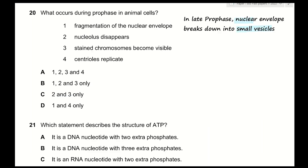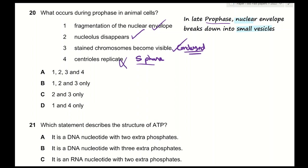Question 20: what occurs during prophase in animal cells? 1 — fragmentation of nuclear envelope — correct: in late prophase the nuclear envelope breaks down into small vesicles. 2 — nucleolus disappears — correct: this also happens in late prophase. 3 — stained chromosomes become visible — correct: chromosomes condense and become visible. 4 — centrioles replicate — incorrect: centrioles replicate during S phase, not prophase; during prophase they move to opposite poles. The answer is B (1, 2, and 3).